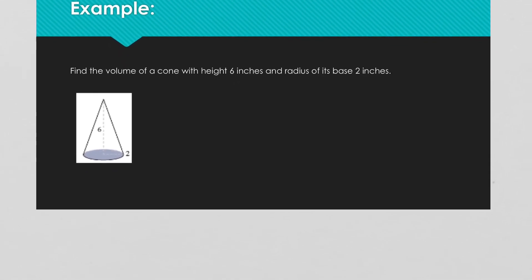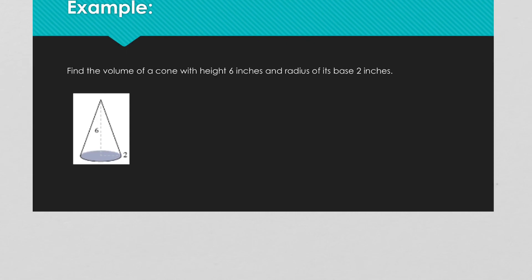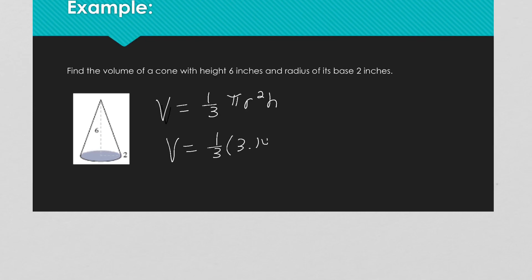Now we're going to find the volume of a cone with a height of 6 inches and a radius of its base of 2 inches. The volume formula is 1/3 × π × r² × h. Remember, volume is always in cubic units. We've got volume = 1/3 times 3.14 times our radius of 2.